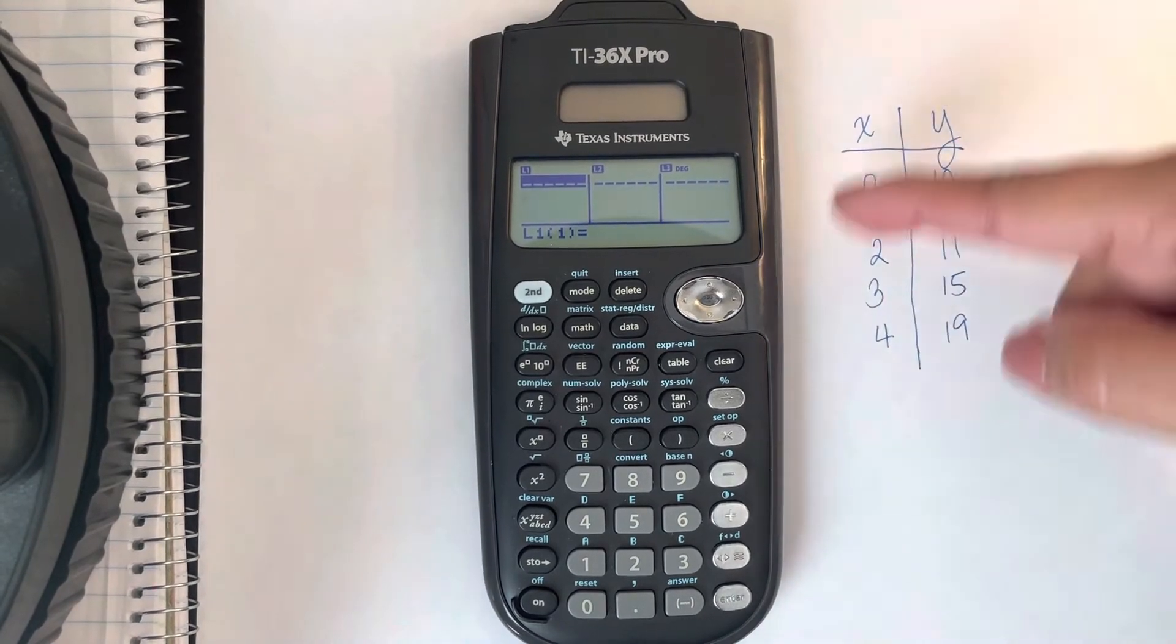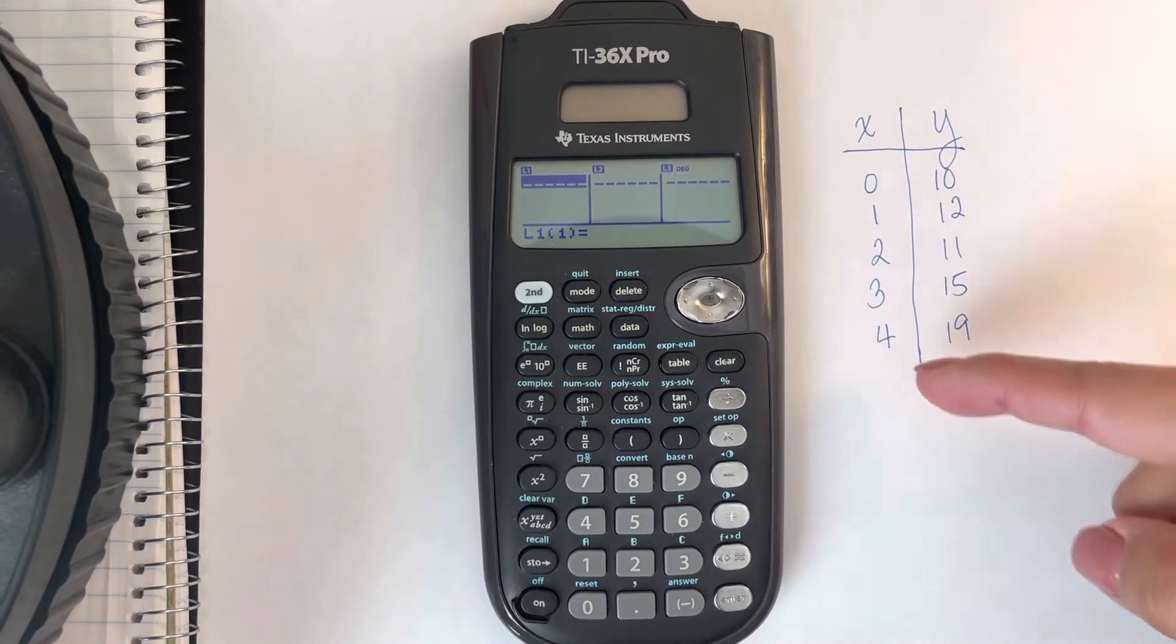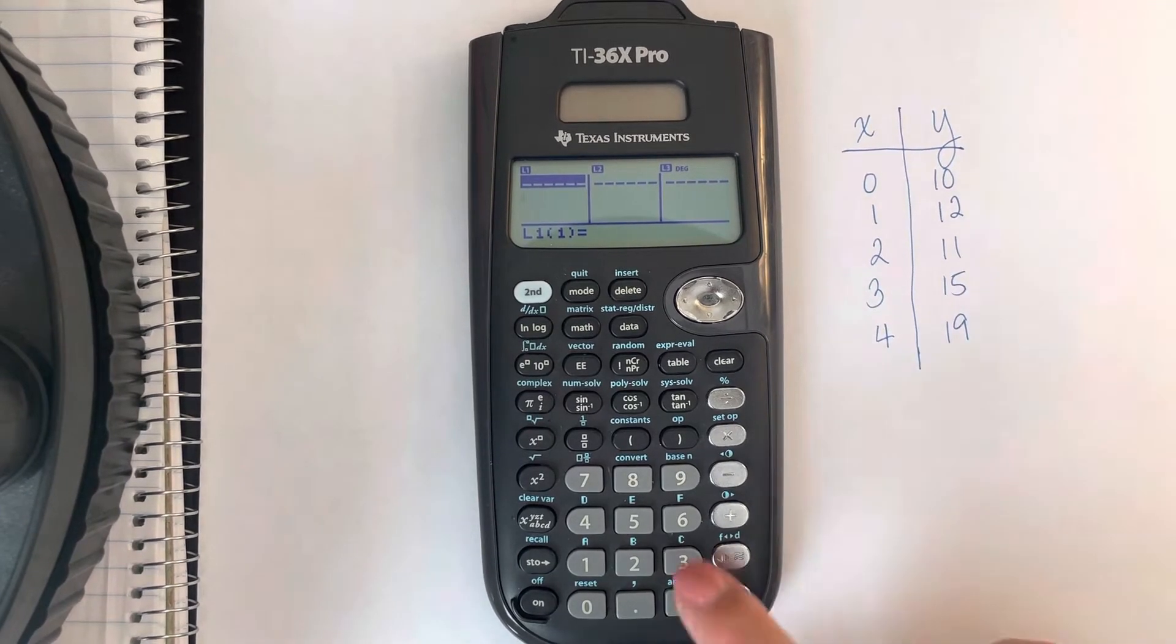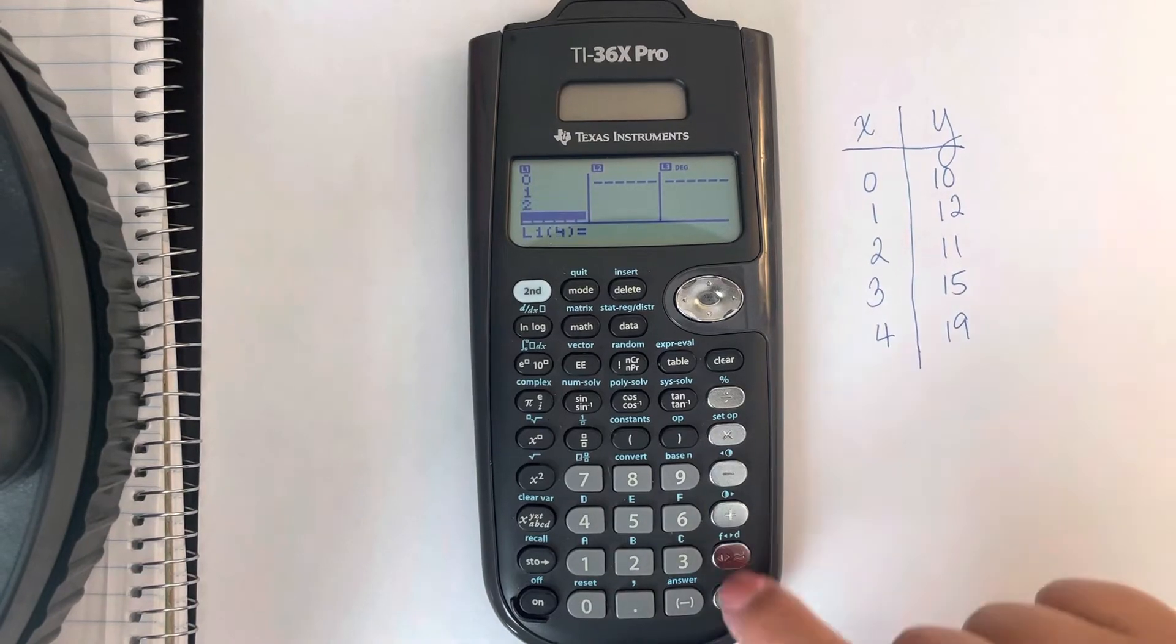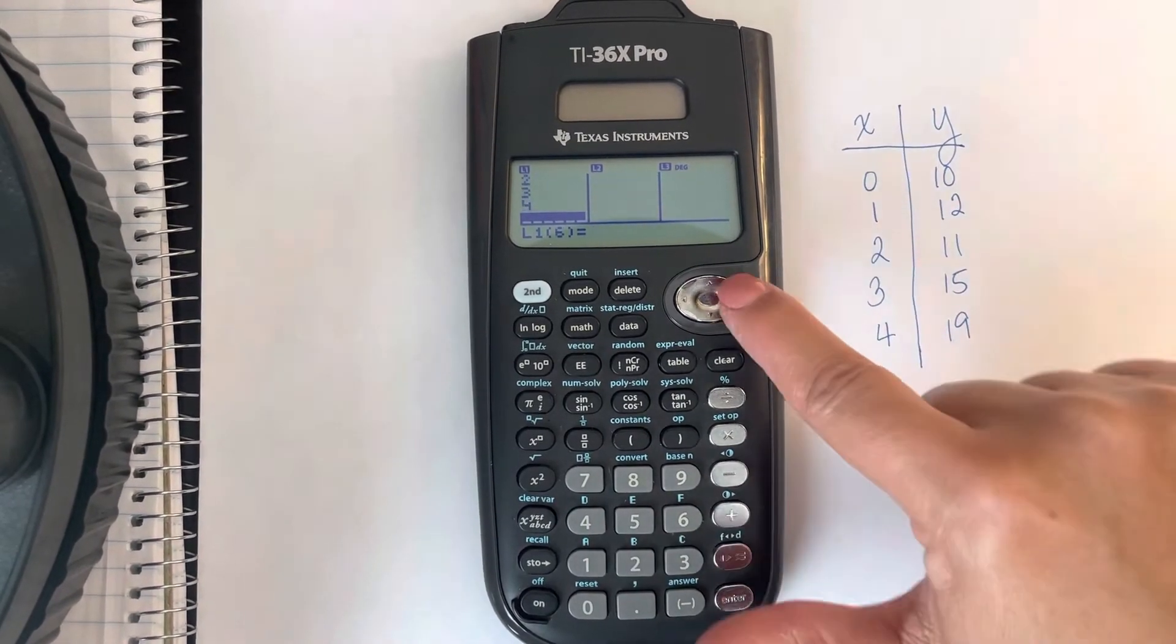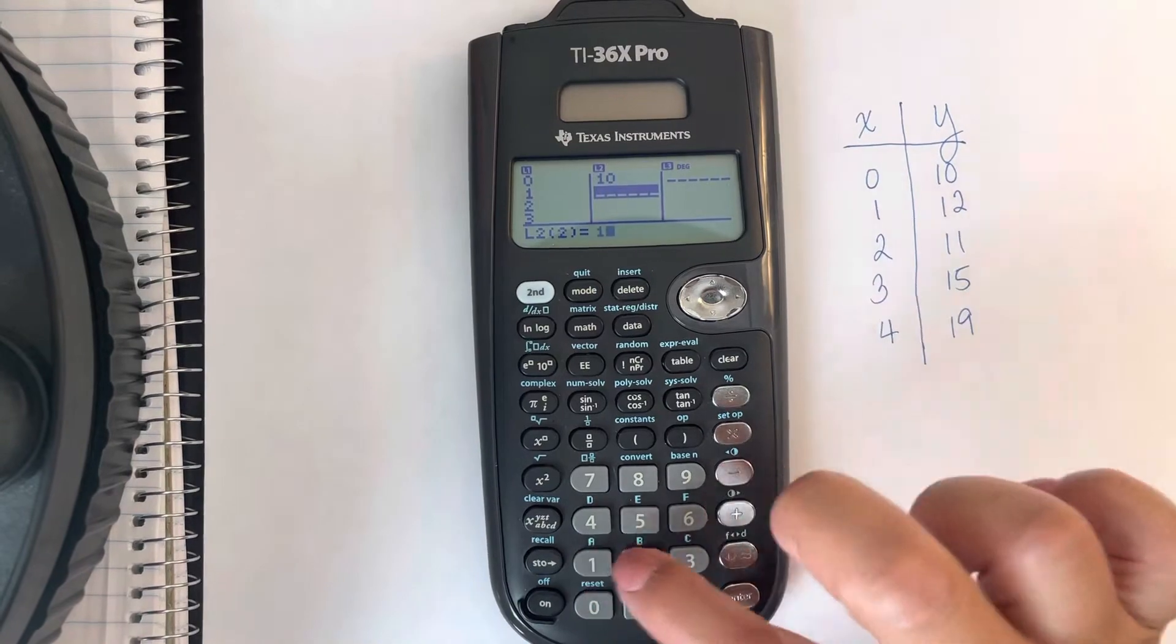Now I have a list of some values here to practice with. I have exactly 5 ordered pairs. I'll enter the x values into list 1 and then I'll scroll over and enter the y values into list 2.